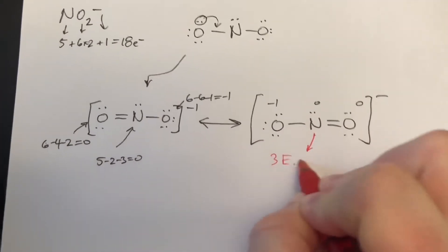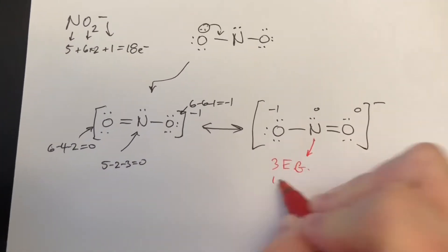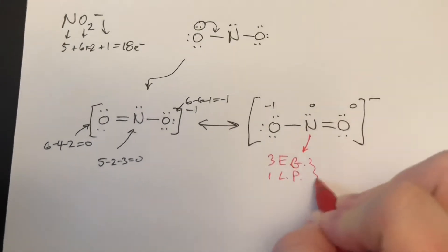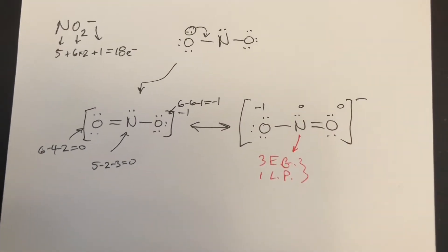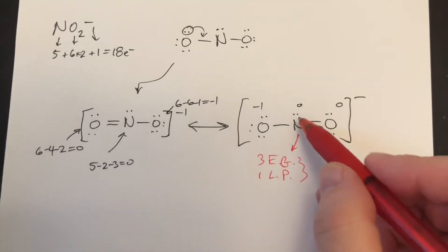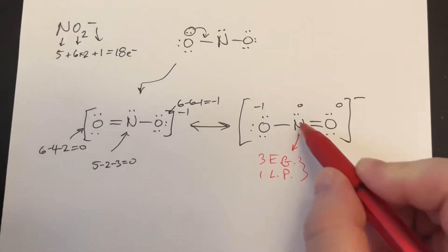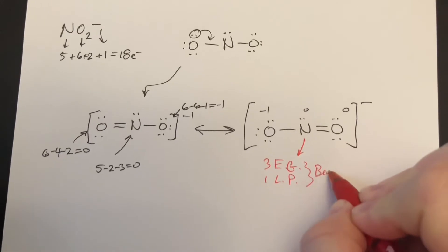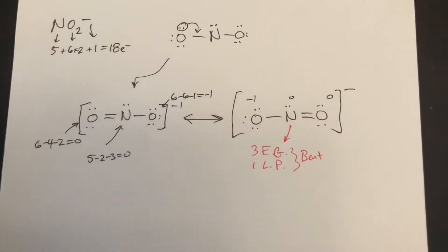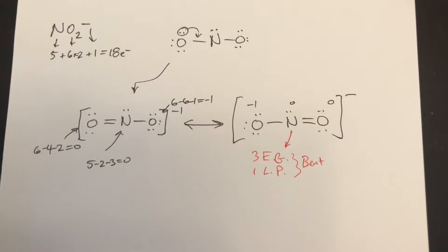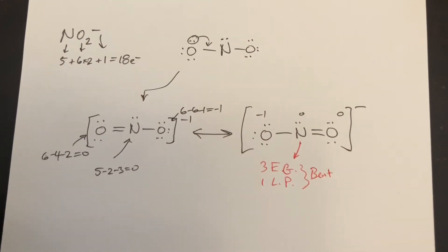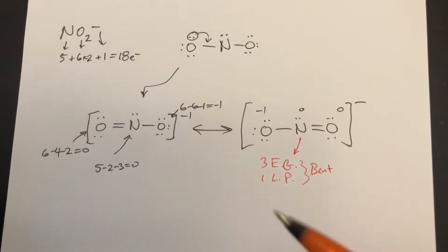Three electron groups, one of which is a lone pair. If you look at your chart, three electron groups with one lone pair ends up forming a bent geometry — or angular, whichever term you like. The two resonance structures have the same geometries and the same hybridization, so I'm just going to work through one.